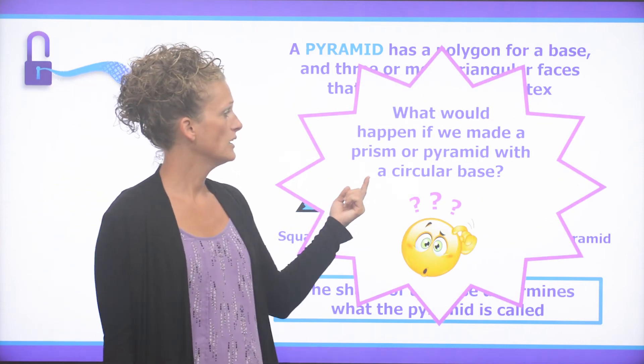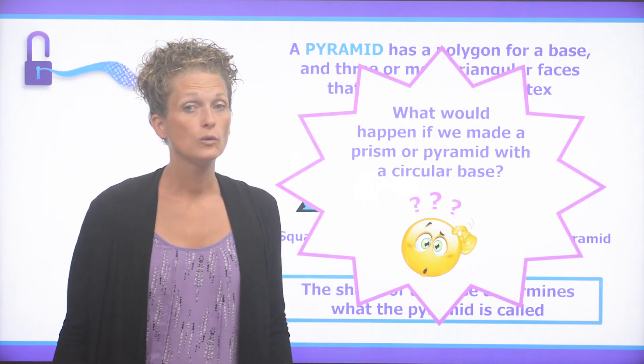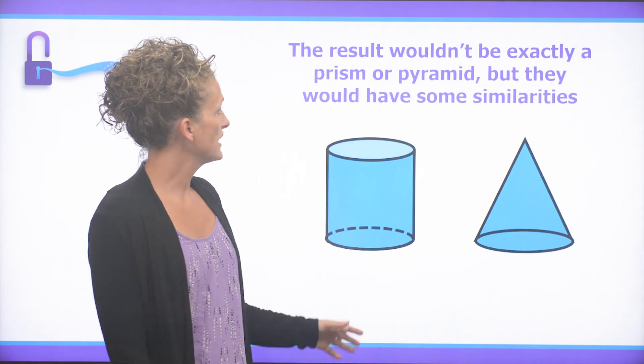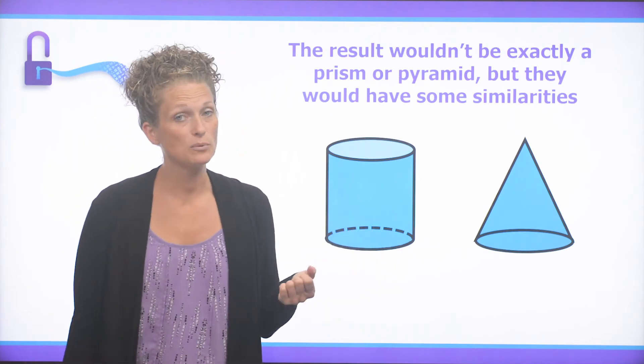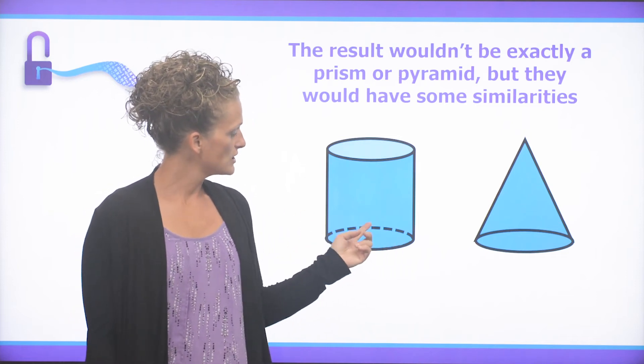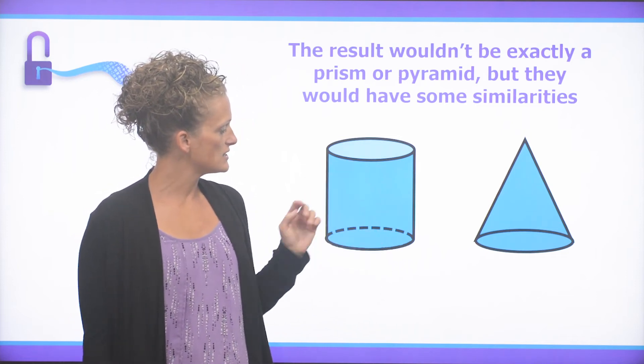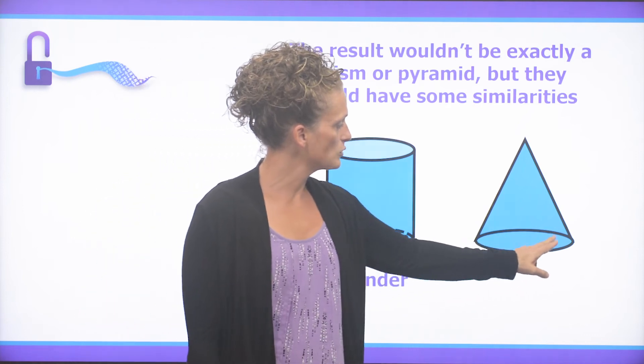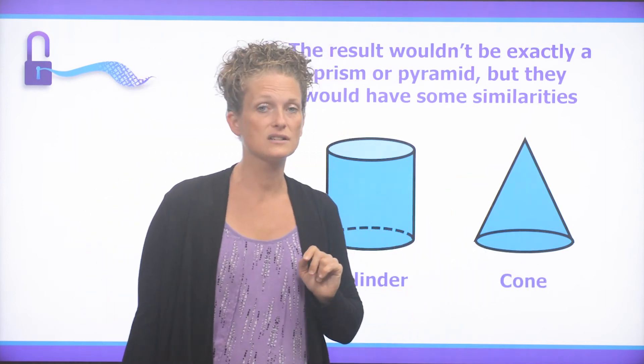What would happen if we made a prism or a pyramid with a circular base? Well, then the result wouldn't exactly be a prism or a pyramid, but they would have some similarities. So here's a circular base. This is a cylinder, and this circular base, where it meets at a single point, is called a cone.